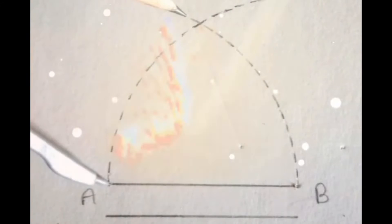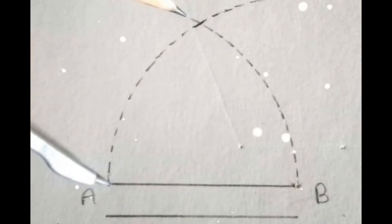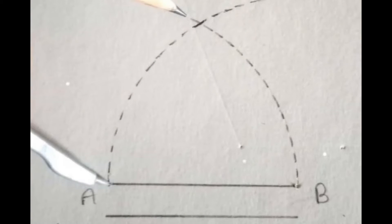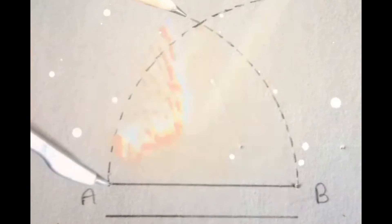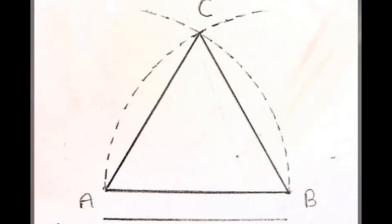Now put the tip of the compass on point B and start to draw an arc. Where the two arcs intersect at the top, that point is C. Now join the points A to C and C to B. This is your equilateral triangle.